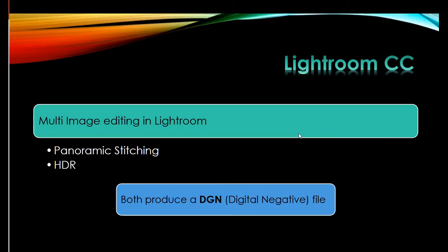So we're going to have a look at Lightroom — this is the CC or Creative Cloud version — because it has a couple of very nice features in terms of panoramic stitching and HDR. The nice thing about both of them is it produces a DNG file or digital negative file, which you can then still apply all the tricks and tools within Camera Raw to, and it basically treats it as a raw file.